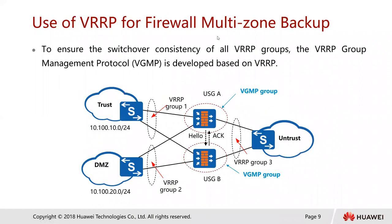To solve this problem, we look at the use of VRRP for firewalls in multi-zone backup. To ensure switchover consistency of all VRRP groups, the VRRP Group Management Protocol — VGMP — is developed based on VRRP. Multiple VRRP groups and VGMP groups communicate by sending hello packets to each other, establishing backup relationships. Multiple VRRP groups on a firewall can be added to a VGMP group, which manages the VRRP groups in a unified manner.